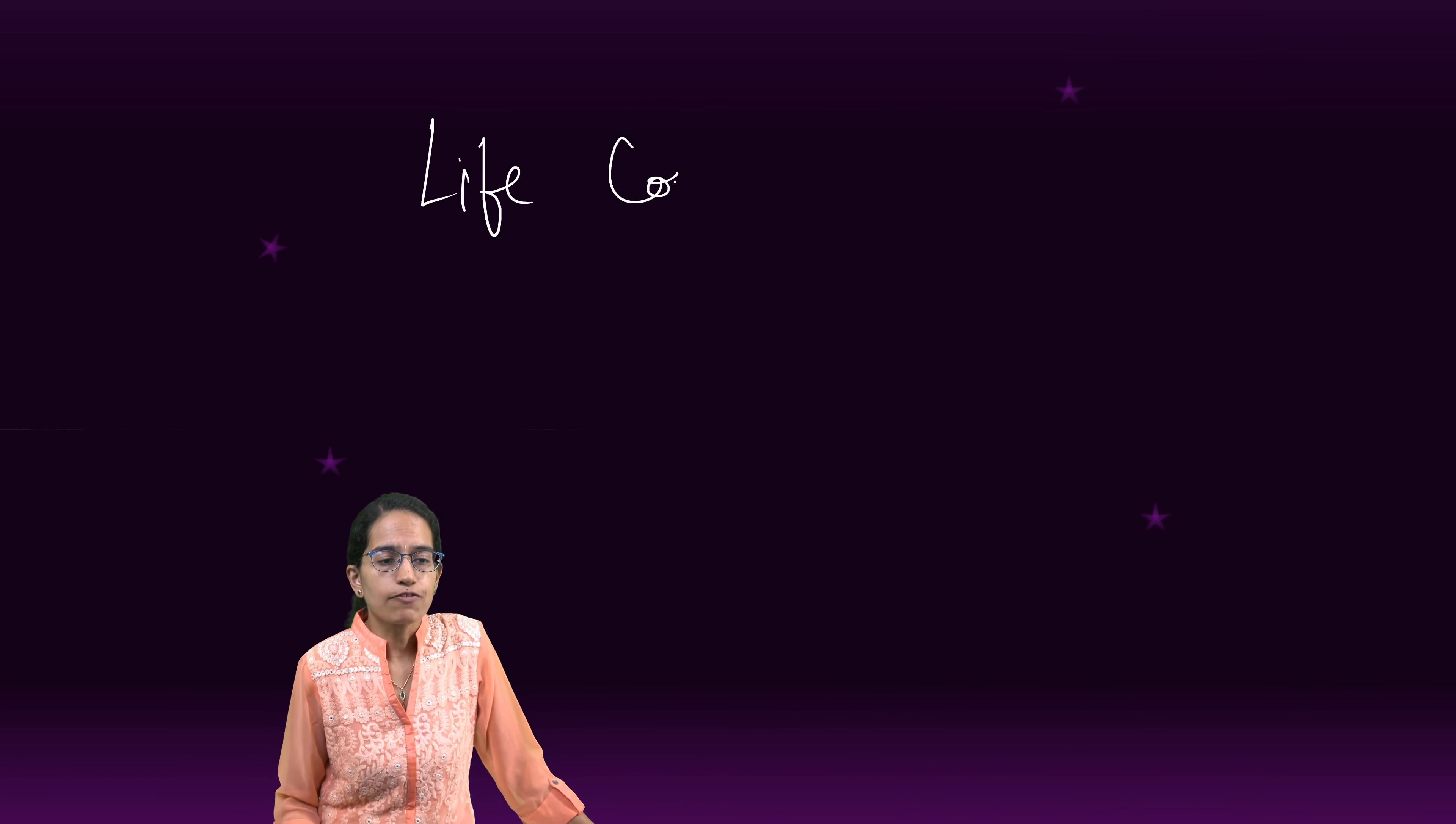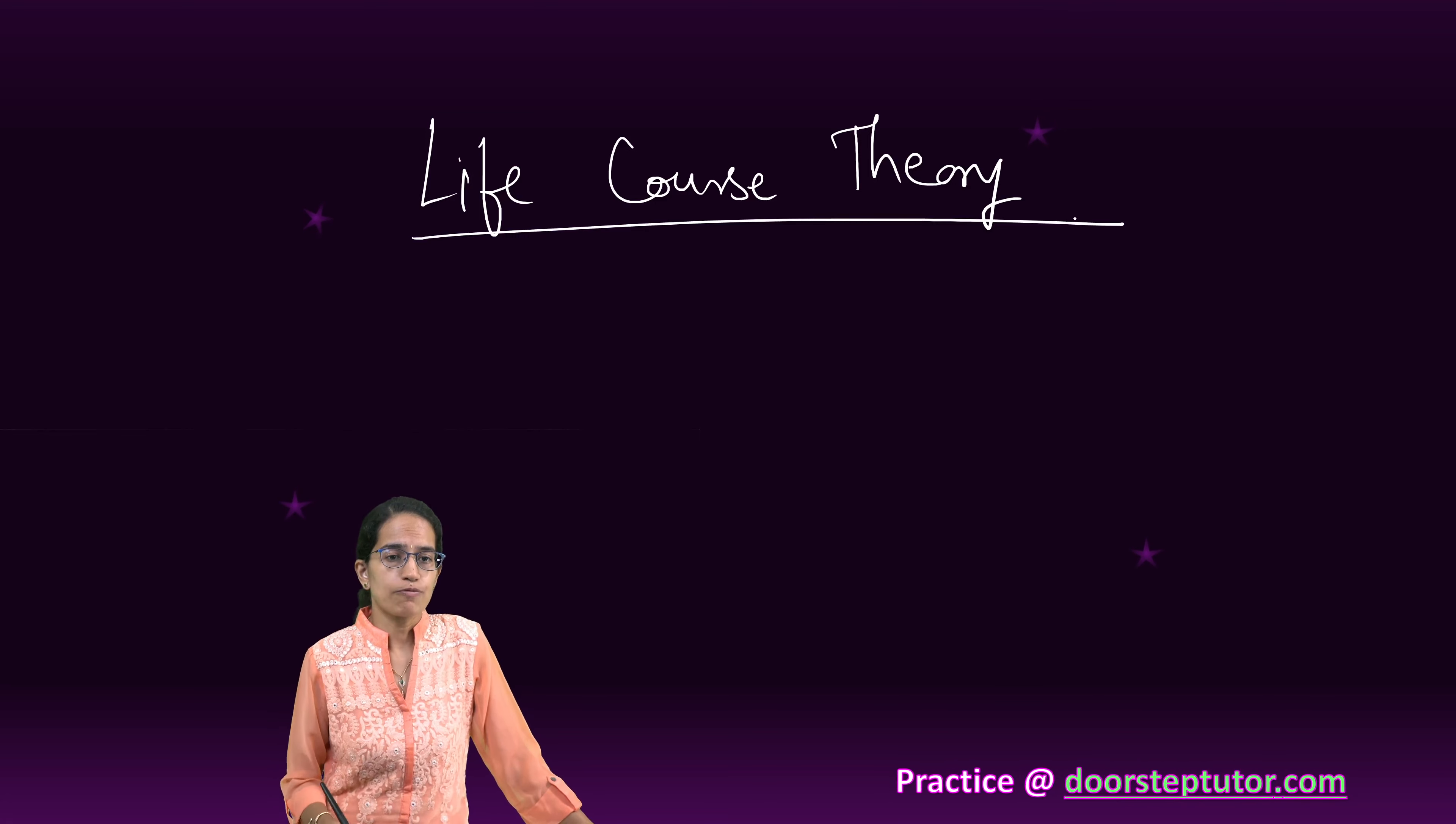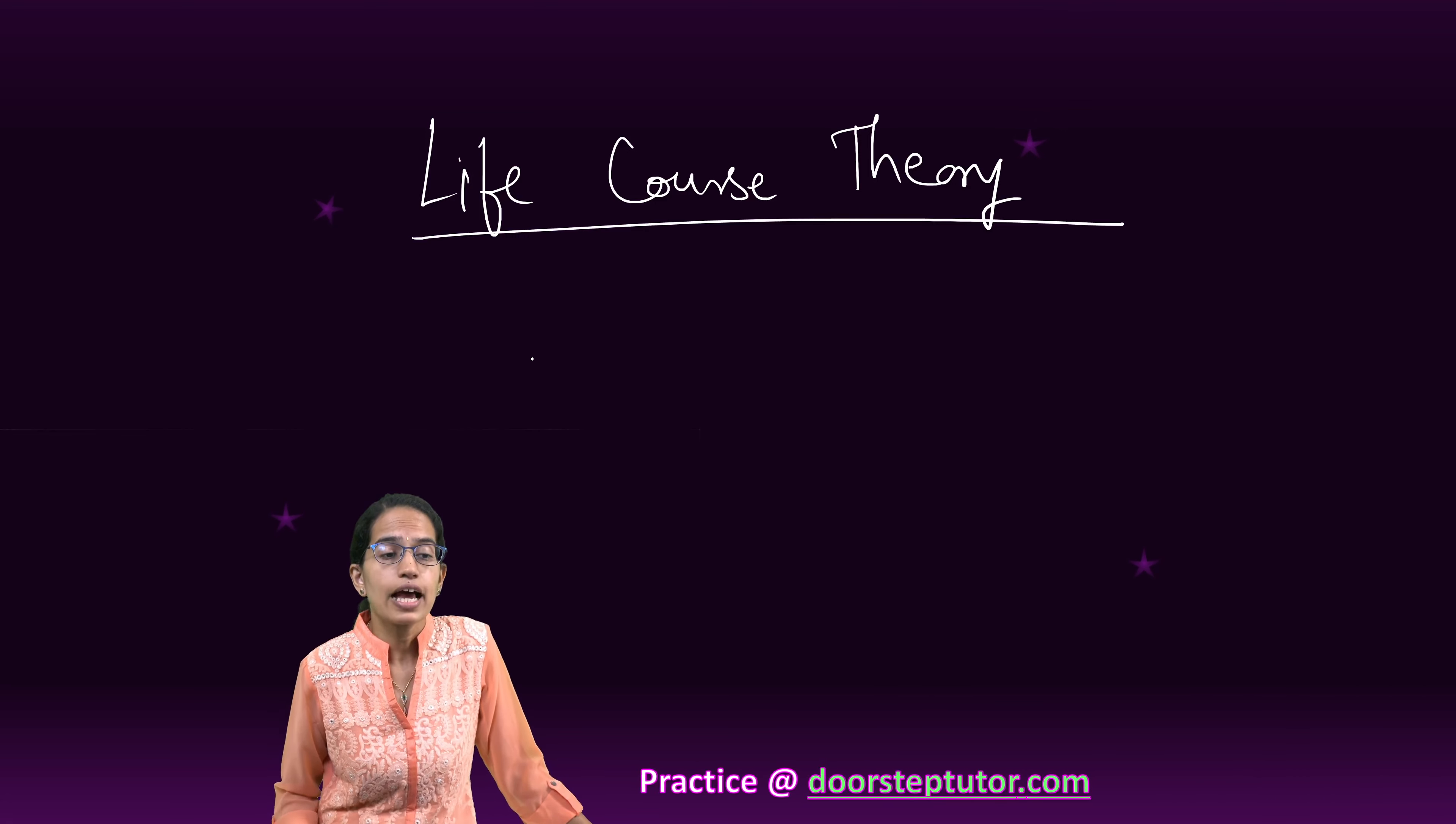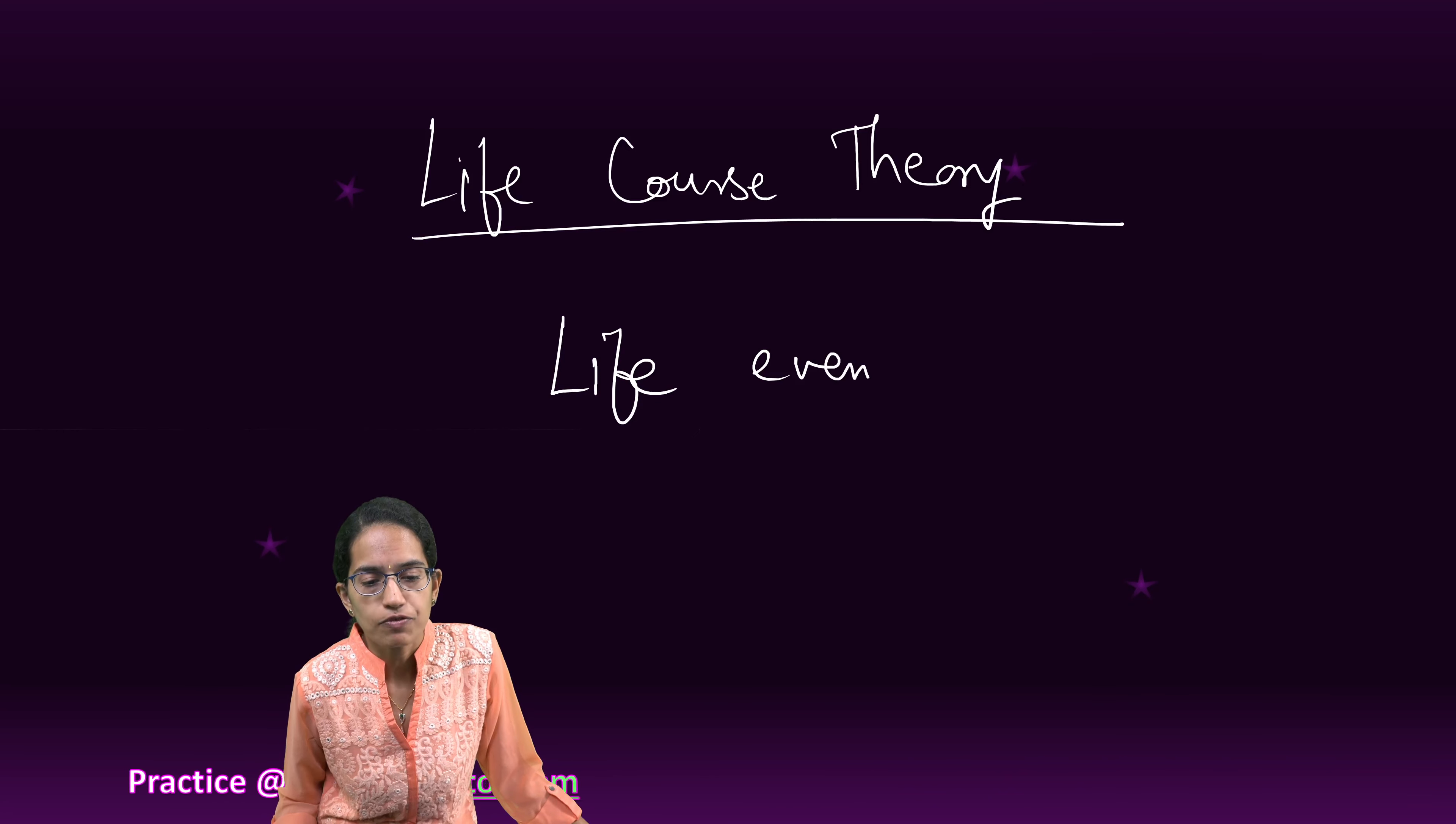The second important theory is the life course theory of migration. What does this life course theory of migration say? Life course theory of migration says that there has been migration because of some life events.